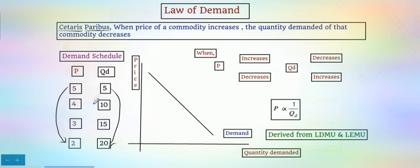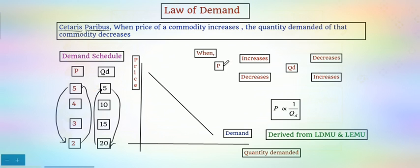It is vice versa also. When the price increases from 2 rupees to 5 rupees, the quantity demanded decreases from 20 kg to 5 kg. From this demand schedule it is clear that when the price of a commodity increases, the quantity demanded decreases. When the price decreases, consumers buy more. So there is an inverse relationship between price and quantity demanded — the law of demand shows this inverse relationship.